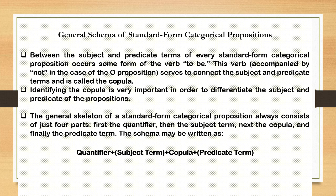Categorical propositions cannot be written in any arbitrary way — there is a specific format known as the standard form. First, you write the quantifier — that is 'all' or 'some.' Then you write the subject term. Then there is the copula, which is a variation of the verb 'to be,' joining the subject and predicate. After the copula you mention the predicate term. This is the general standard format.